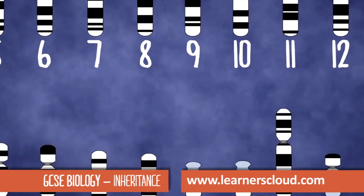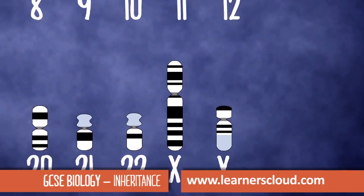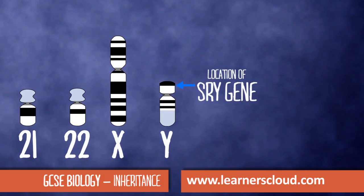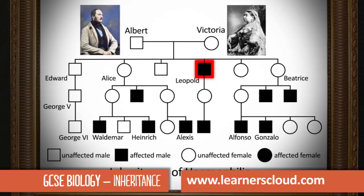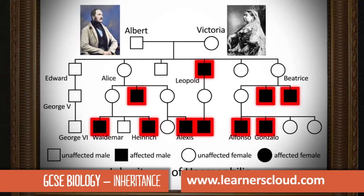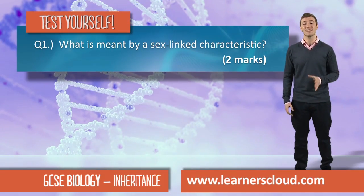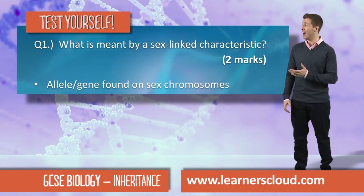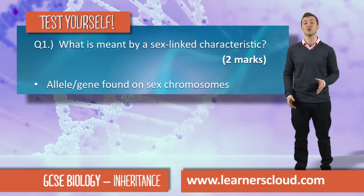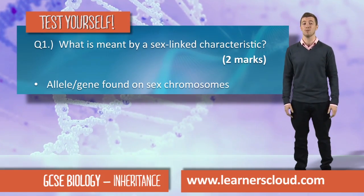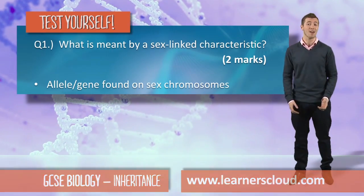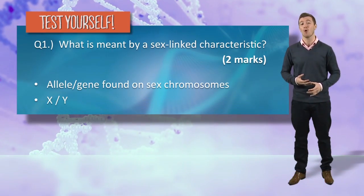A single gene on the Y chromosome determines which sex organs you develop, and several of her grandchildren and great-grandchildren had a genetic illness called haemophilia. A sex-linked characteristic means that the gene or the allele is found on the sex chromosome, and this would be either the X or the Y.